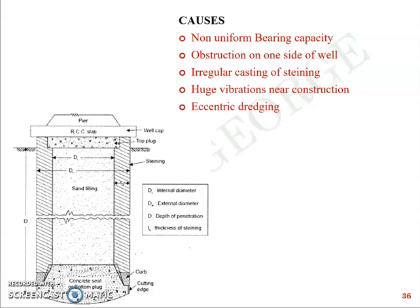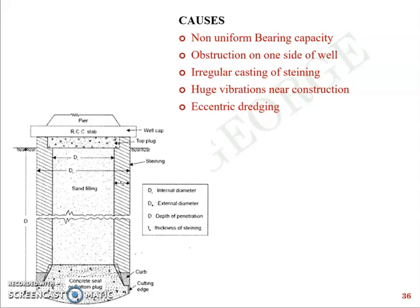Another cause is eccentric dredging. As seen in the classroom video, while sinking the well you take out soil from within the steining forming a cavity — this is called dredging. If eccentric dredging occurs, meaning soil is removed more from one side than the other, it may also cause tilt. Another cause is the presence of boulders on one side — a rock particle of less than two meters in diameter near the cutting edge can be expected to cause tilt.